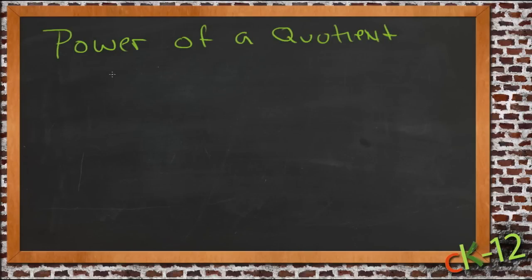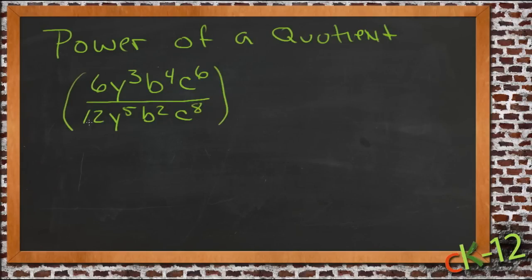So let's come up with an example. Let's do 6y cubed b to the 4th c to the 6th divided by 12y to the 5th b squared c to the 8th. And we'll take that whole thing and we're going to raise it to the power of 3.